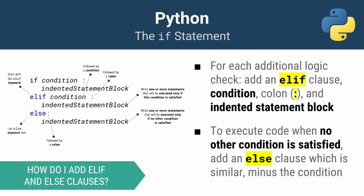Once again, the anatomy: below the if condition, add as many elifs as you want. An elif clause starts with the elif keyword, then a condition, then a colon, followed by an indented statement block. If you want code to execute when none of the above conditions are met, add an optional else clause with its own indented statement block.